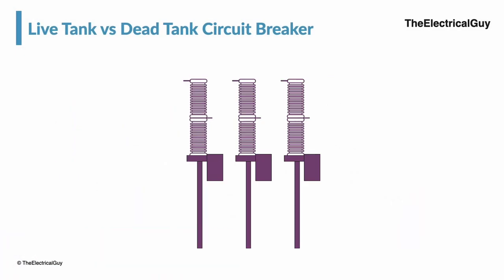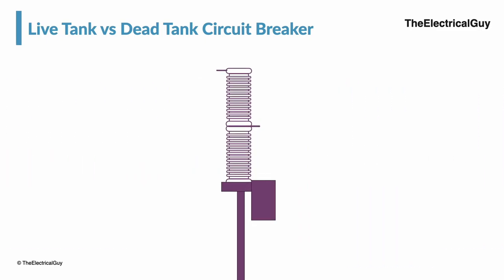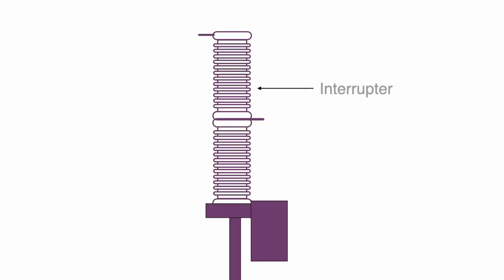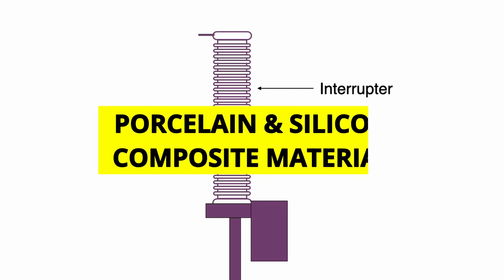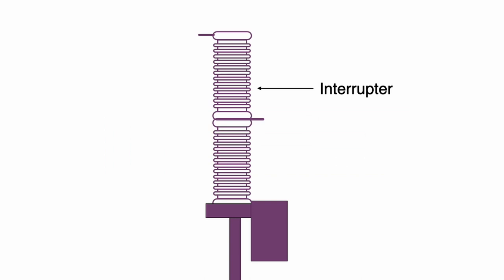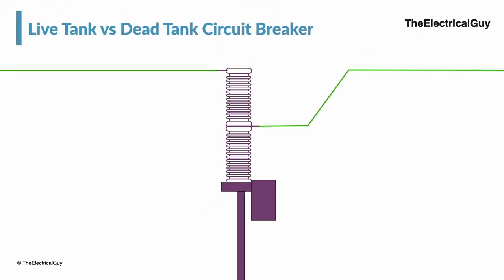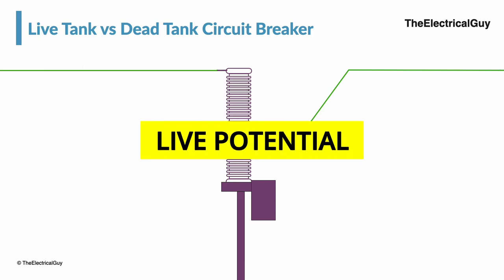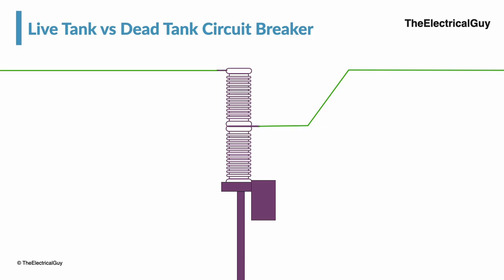Now look at the circuit breaker shown on the screen. For better understanding, I am only showing a single phase of the 3-phase circuit breaker. The top part consists of the interrupter — inside the top insulator, fixed and moving main and arcing contacts are there. The insulator can be made of porcelain or silicon composite material. To the interrupter part we connect the incoming and outgoing supply, and as a result the interrupter part is at a high or live potential. Hence such breakers are called live tank circuit breakers.